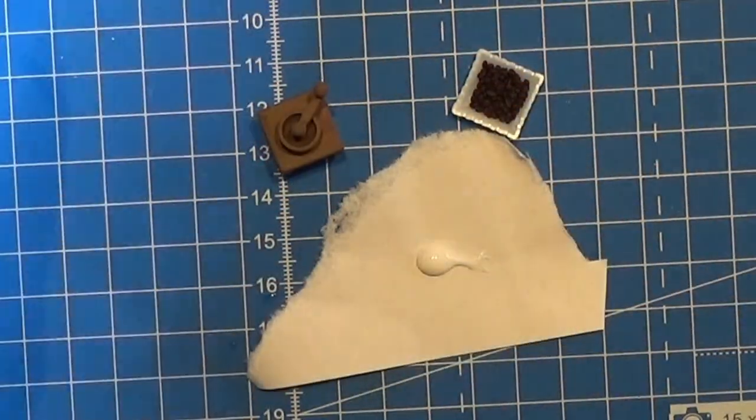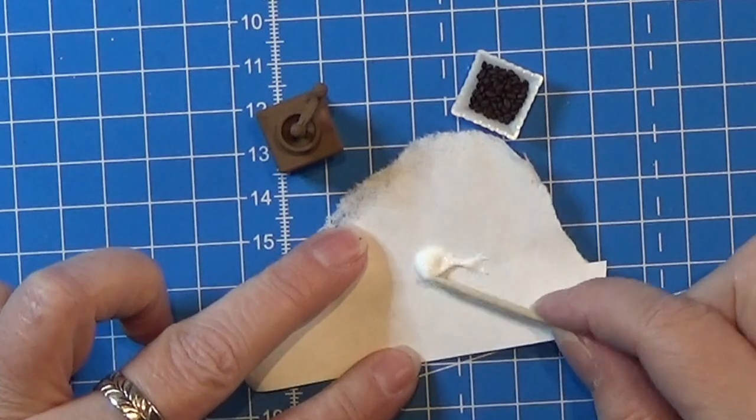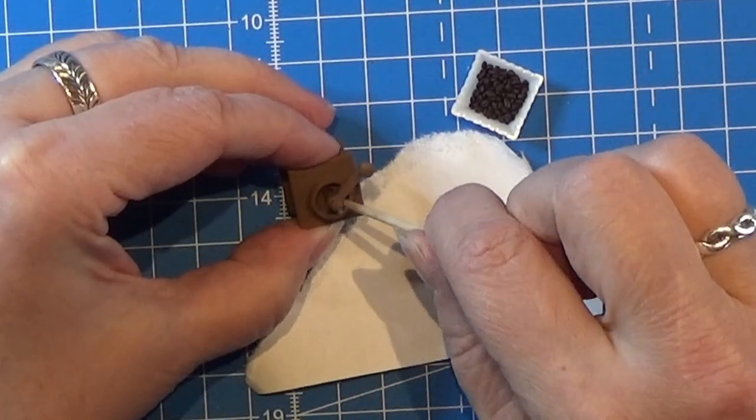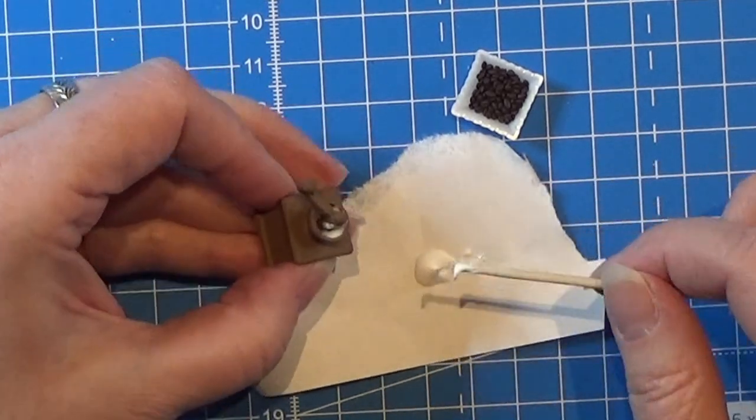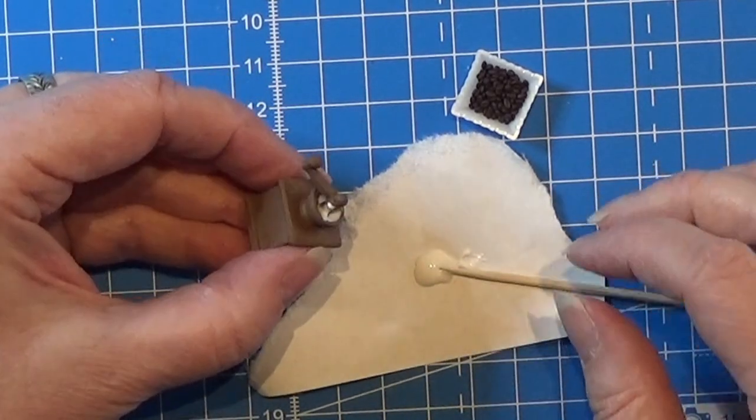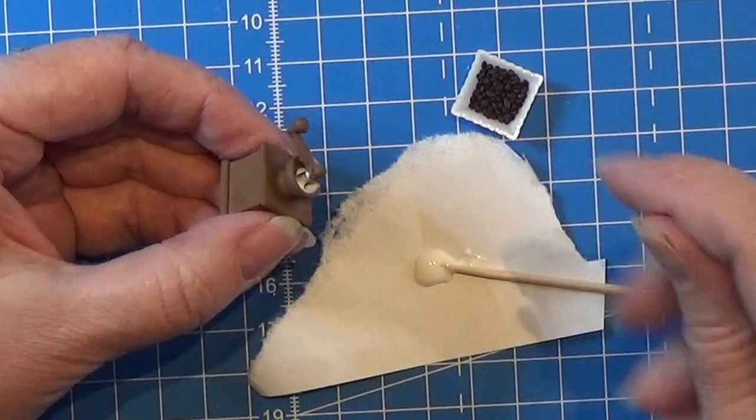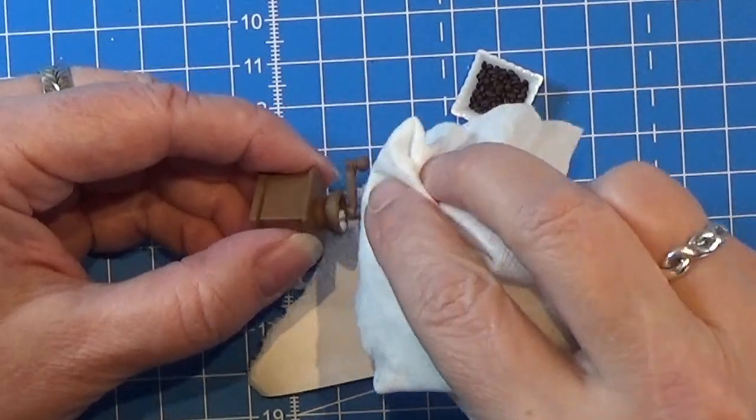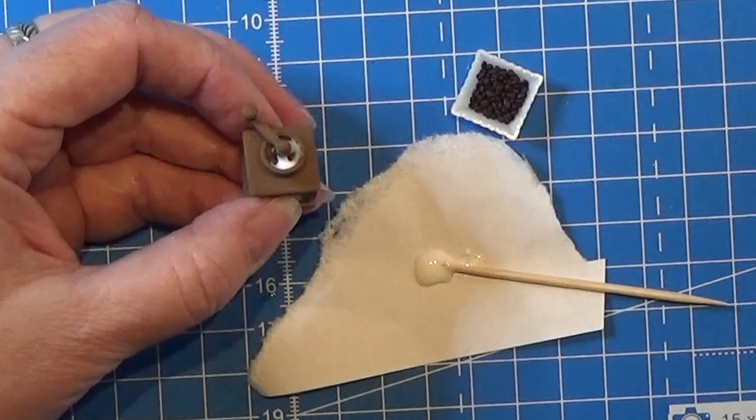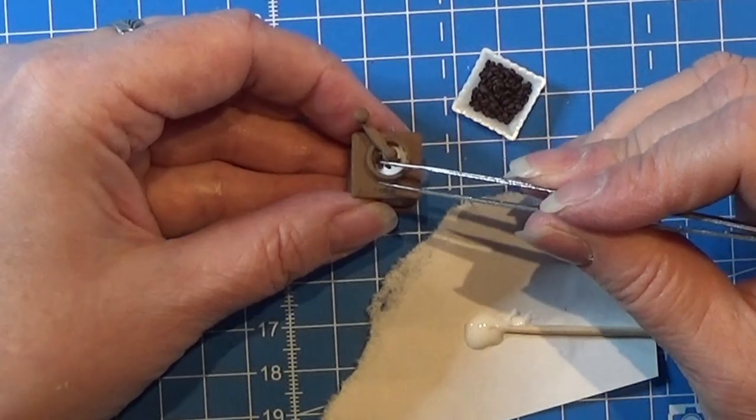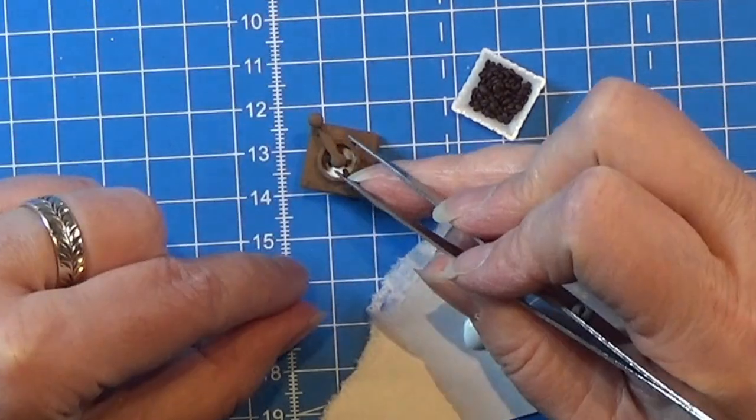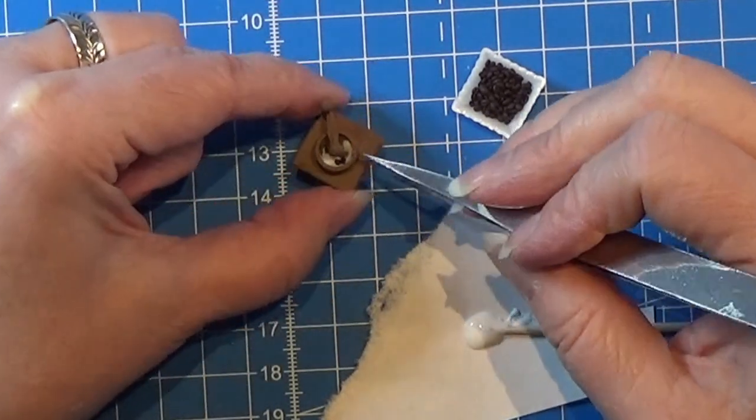When that is all dry, I am going to take some of my wood glue again—I really love this glue—and I'm popping some of it down here in the top part of this little coffee grinder so that I can place some of my coffee beans in there. I'm just making sure that I don't get glue everywhere. Then I just fill this little part up with my coffee beans.